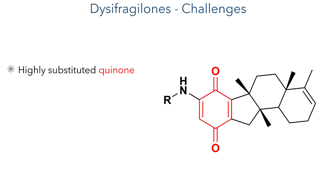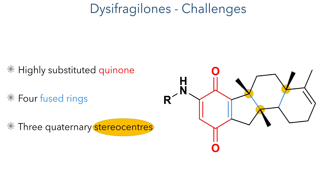The challenges associated with synthesising the Dissi-Fragalons and the related Dissi-Darverons come from the construction of the highly substituted quinone ring. This forms part of the carbon framework of the molecule, which is comprised of four fused rings. This carbon framework contains three quaternary stereocenters, all of which must be controlled to achieve the correct structure.